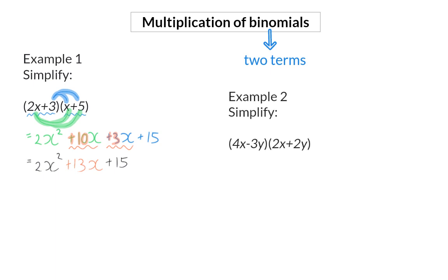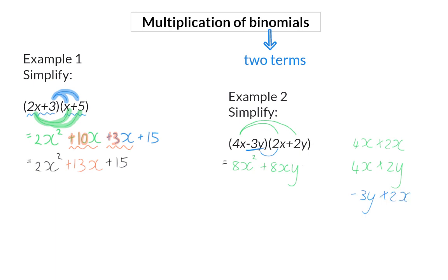Example 2 — Simplify. Here we once again have two binomials. I'm going to start by multiplying 4x with everything in the second bracket. So 4x times 2x gives 8x squared, and then 4x multiplied by 2y gives 8xy. Now I also multiply minus 3y with everything in the second bracket: minus 3y times 2x gives minus 6xy, and minus 3y times 2y gives minus 6y squared.